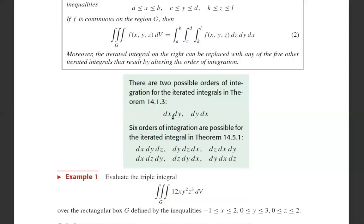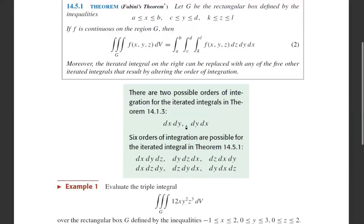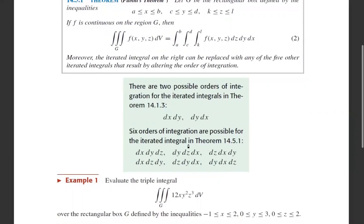For the two-variable case, the only possibilities are dx dy and dy dx. For triple integrals, six orders of integration are possible in theorem 14.5.1: dx dy dz, dx dz dy, dy dx dz, dy dz dx, dz dx dy, dz dy dx. So these 6 possibilities are there.